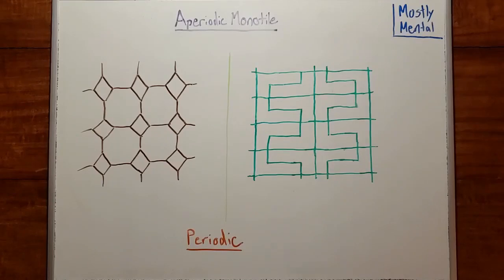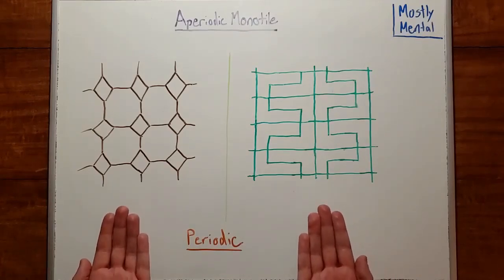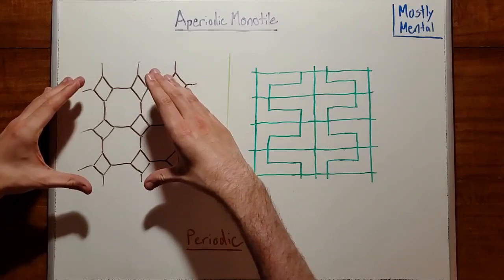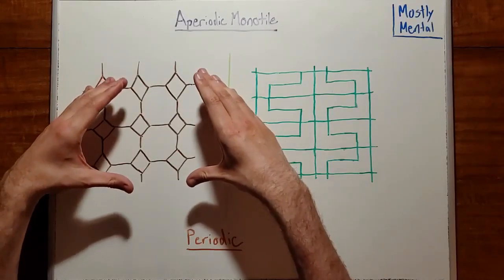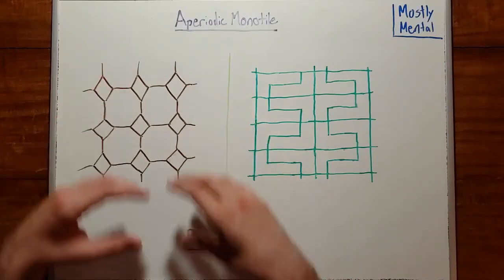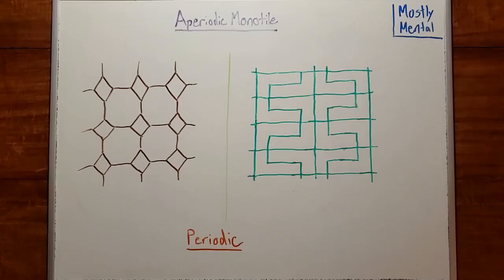You might notice that both of these tilings repeat. So I can take this tiling and slide it over, and what we get will look exactly the same. And the same is true for this tiling. We call a repeating tiling like these periodic.